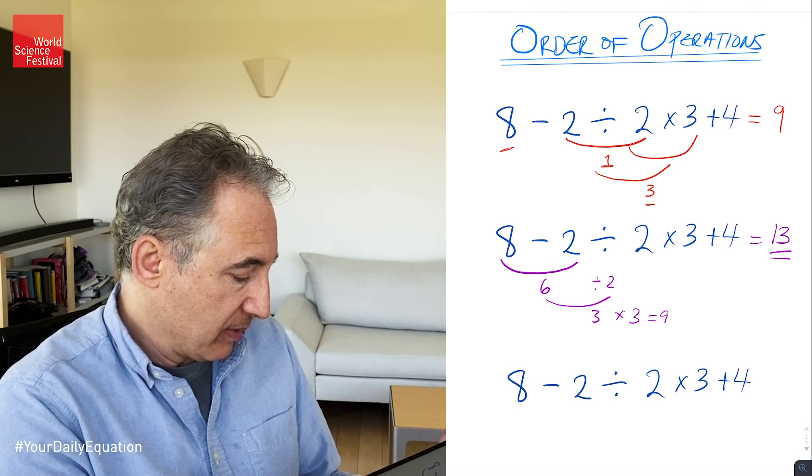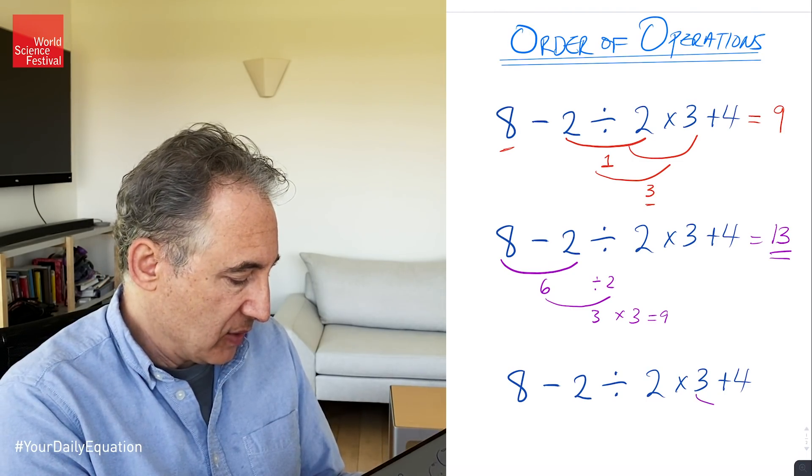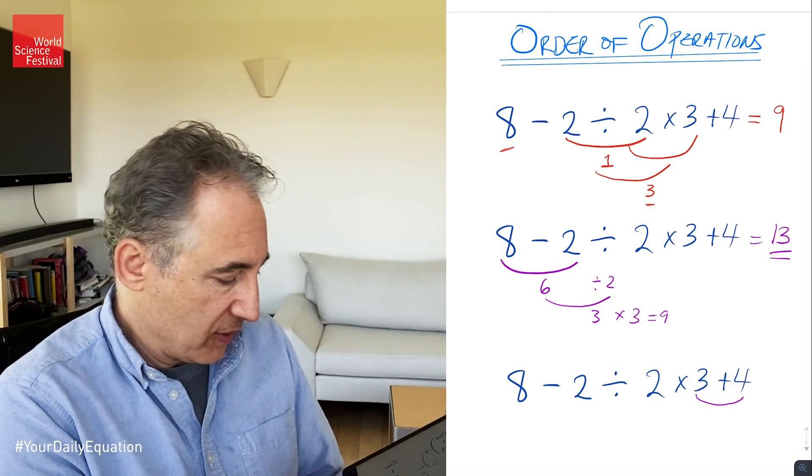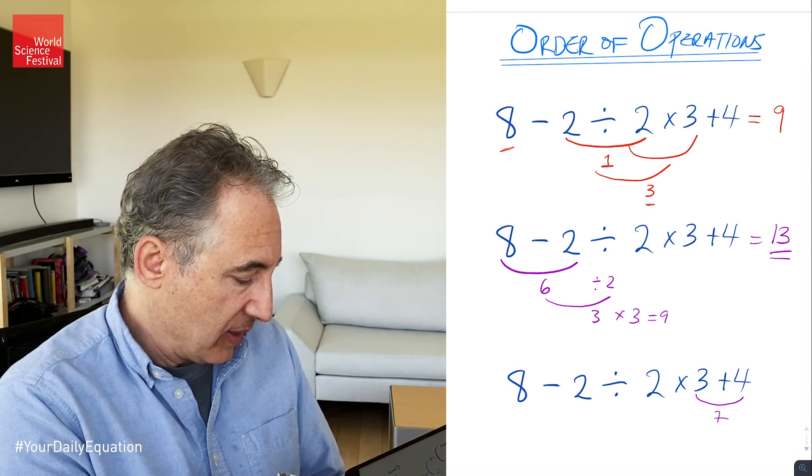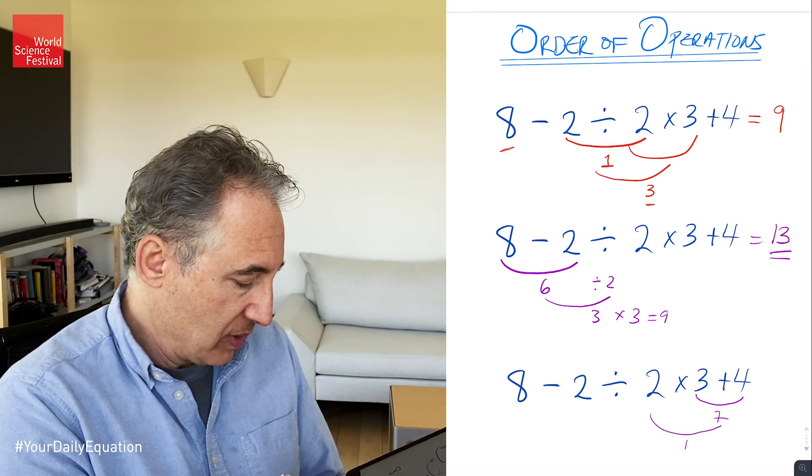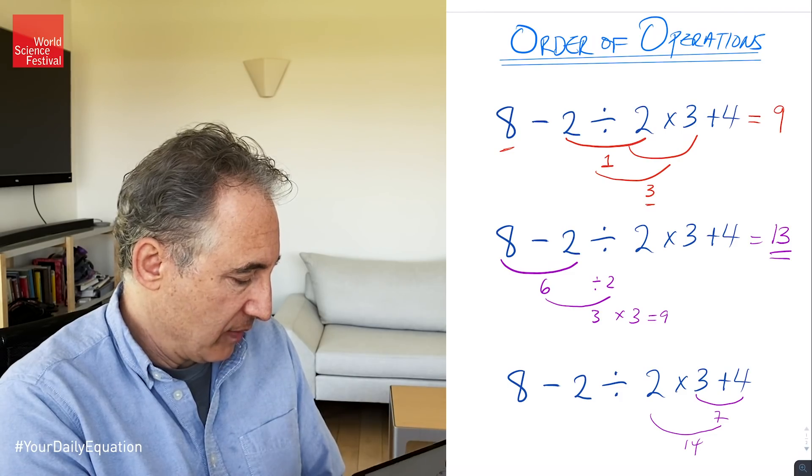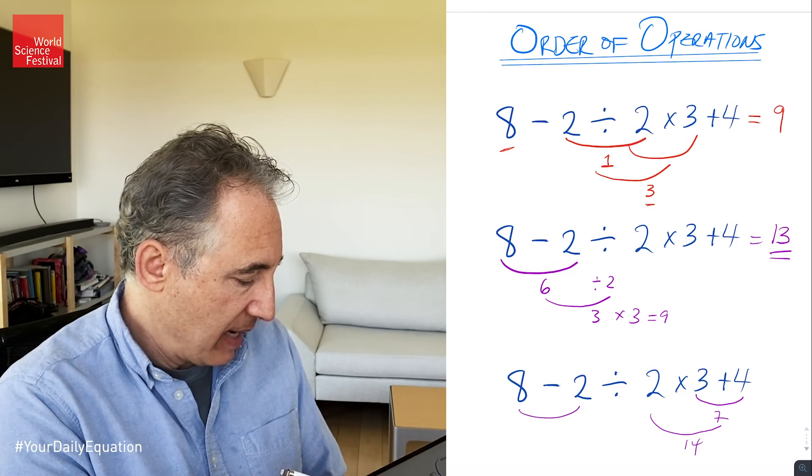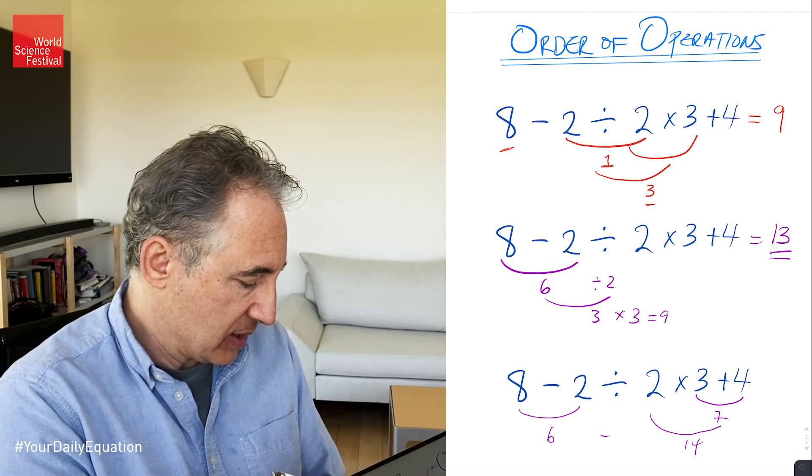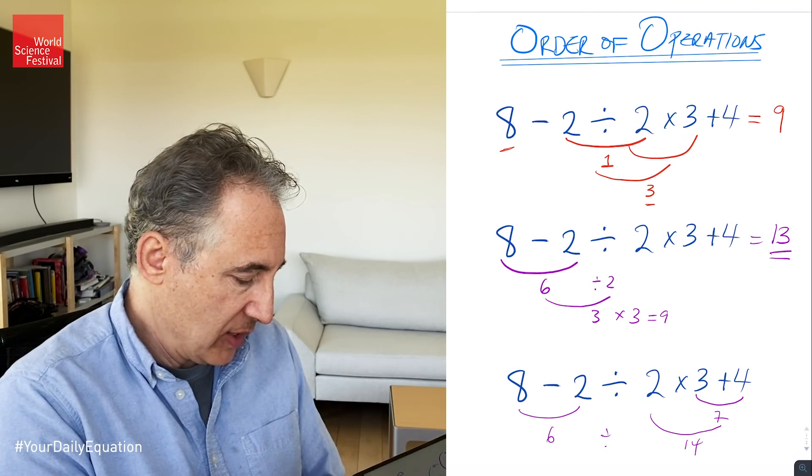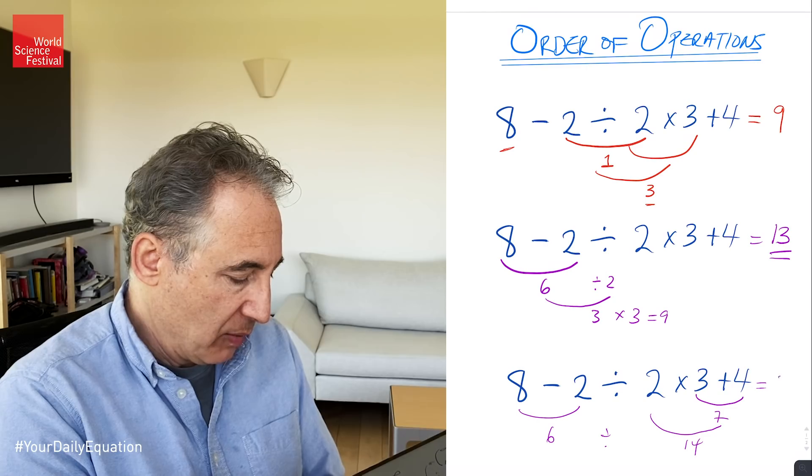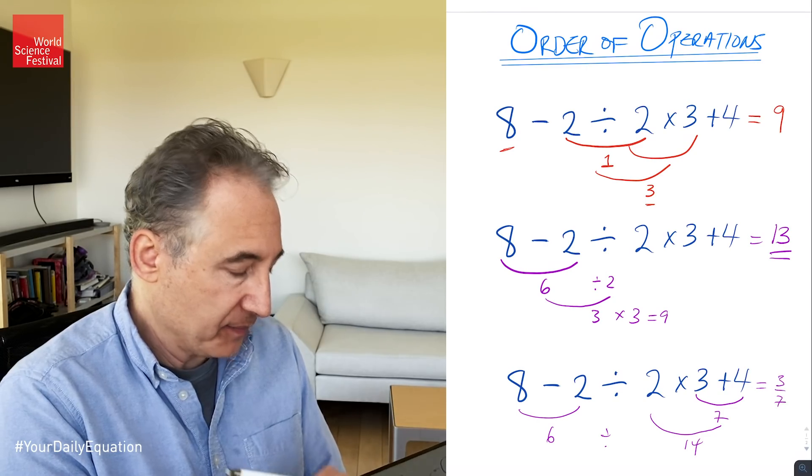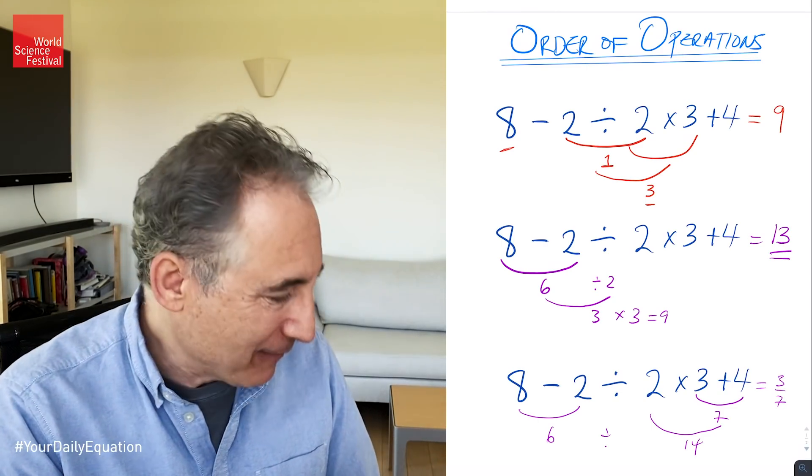And what other things can you do? Well, I don't know. If you did the 3 plus the 4 first, you got a 7. And then you did the 7 times a 2, you get a 14 over here. And if you did the 8 minus 2 to get a 6, and then you did a 6 divided by the 14, you'd have 6 over 14, which would be 3 divided by 7. So a completely different answer.